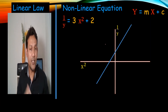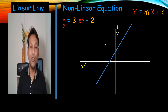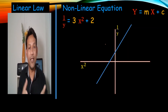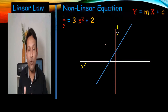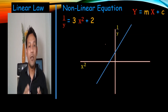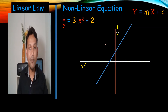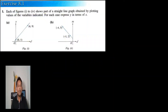So in this chapter, what we are doing is learning how we can convert a non-linear equation into straight line form — not a linear equation per se, but in the straight line form. For that purpose I have taken a few examples from the additional maths book. In linear law exercise 8.1, we have two types of questions, and we also have two types of questions in examination.